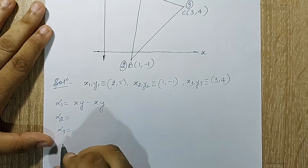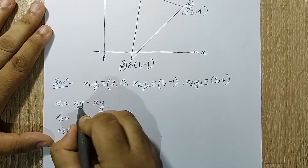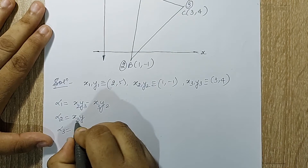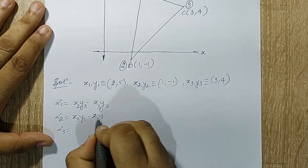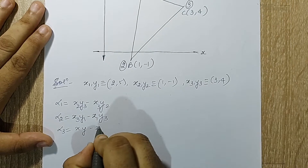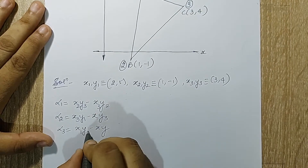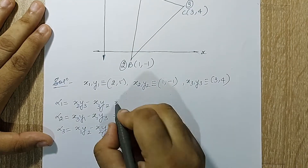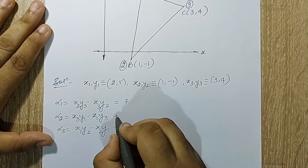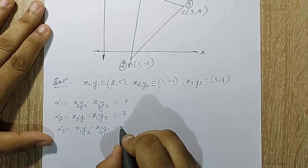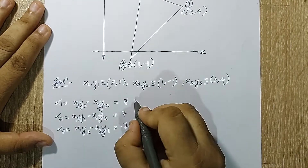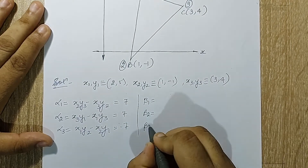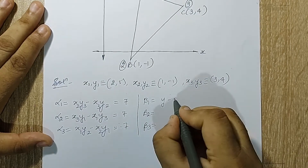I know alpha is given by the subtraction of product of x-y terms. After 1 comes 2 and then 3, so the subscript pattern follows 2-3, 3-1, 1-2. When I solve this, I get alpha 1 as 7, alpha 2 as 7, and alpha 3 as minus 7.